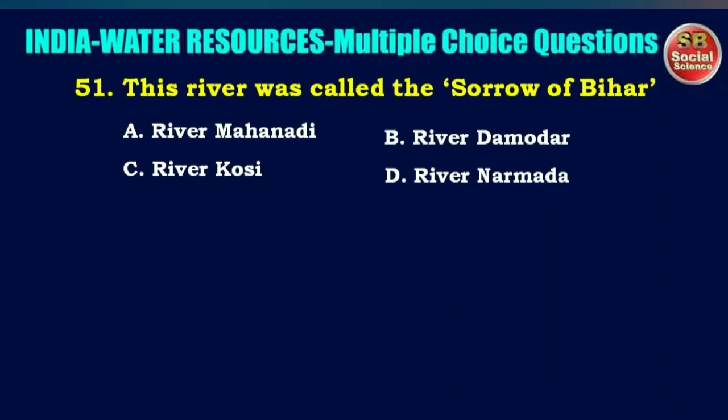This river was called the Sorrow of Bihar — options are River Mahanadi, River Damodar, River Kosi, or River Narmada. The right answer is option C: River Kosi.